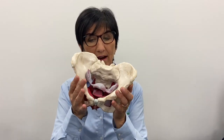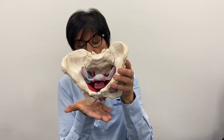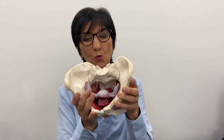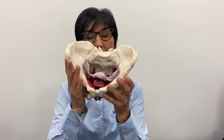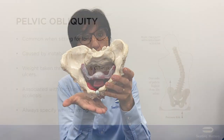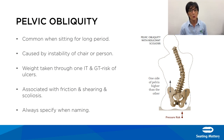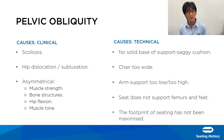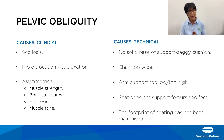Pelvic obliquity is common when people sit for long periods and is caused by instability of the person or the chair. The pelvis is tilted to one side, with weight going through one IT. It is associated with shear and friction, and we always name it according to the lower side. Clinically, causes include scoliosis, hip dislocation or subluxation, or asymmetry in muscle strength, bone structures, hip flexion, or muscle tone.